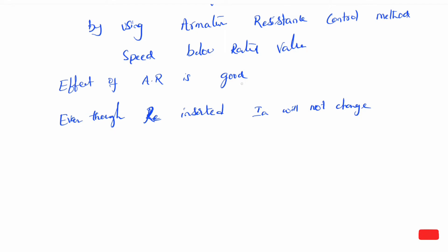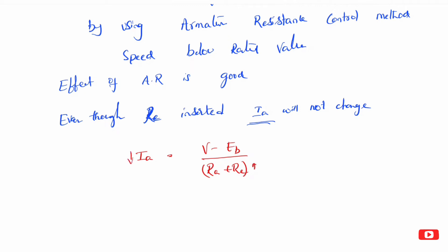Even though Re is the external resistance inserted, Ia does not really change significantly. The formula for armature current is: Ia is equal to V minus Eb divided by Ra plus Re. So as a person adds Re, Eb also decreases, and the net effect keeps Ia approximately constant.